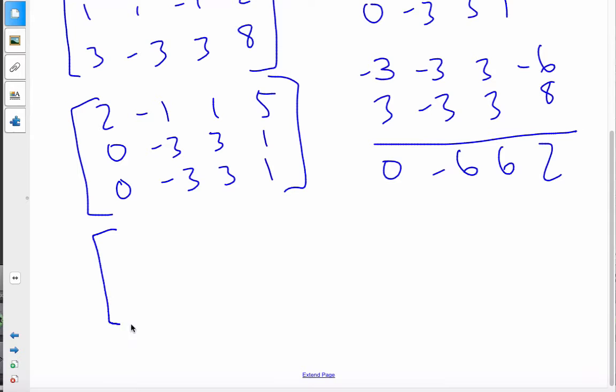And so now I can see that this is 2, negative 1, 1, 5, 0, negative 3, 3, and 1. If I just add them straight away or subtract them straight away, I get 0, 0, 0, 0.